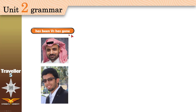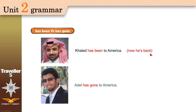Has been and has gone — very easy. Khalid has been to America, and Adil has gone to America. Where is Khalid now? He is in Saudi Arabia — he's been to America before, but he came back. Where is Adil now? He is still there in America — he has gone. Another example: if I see my brother at home and ask 'Where have you been?' he says 'I've been to the supermarket' — he came back. But 'I've gone to the supermarket' means he is still there.